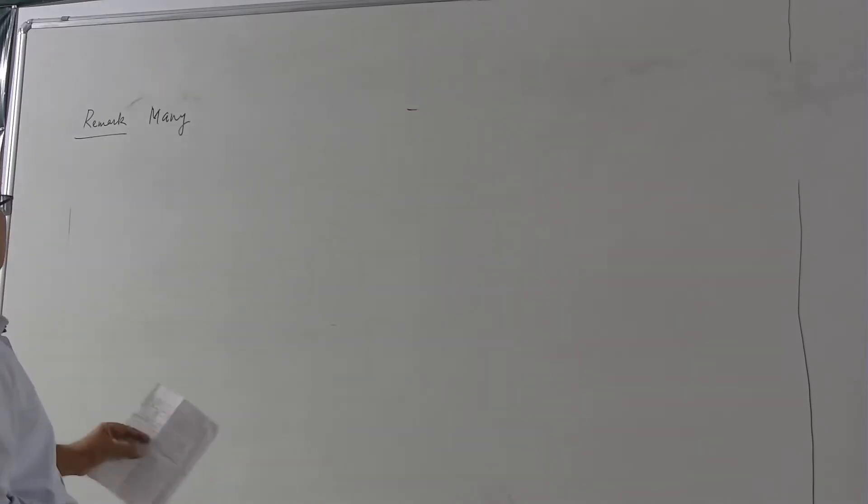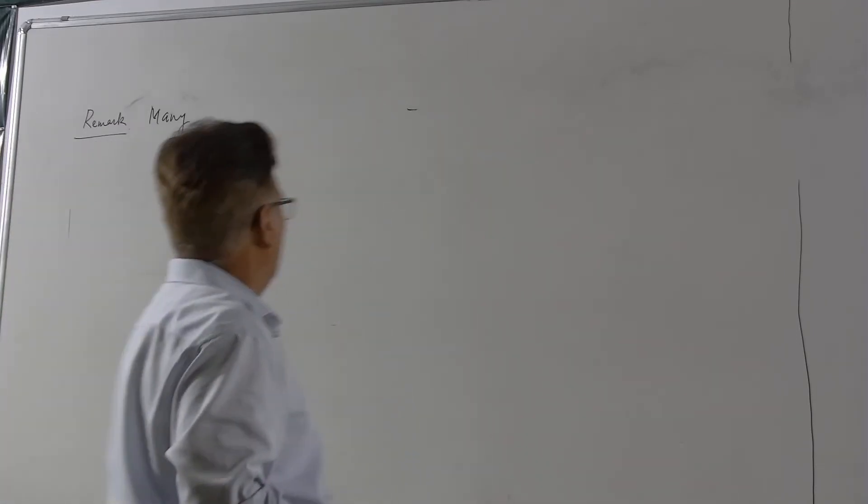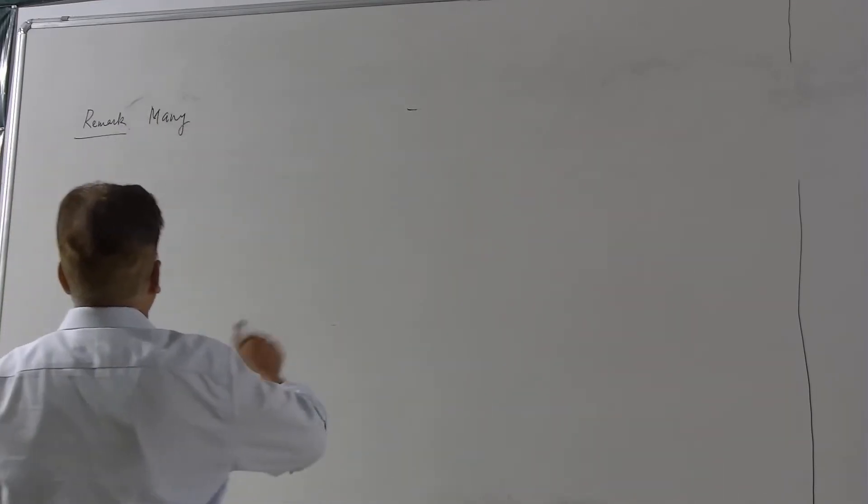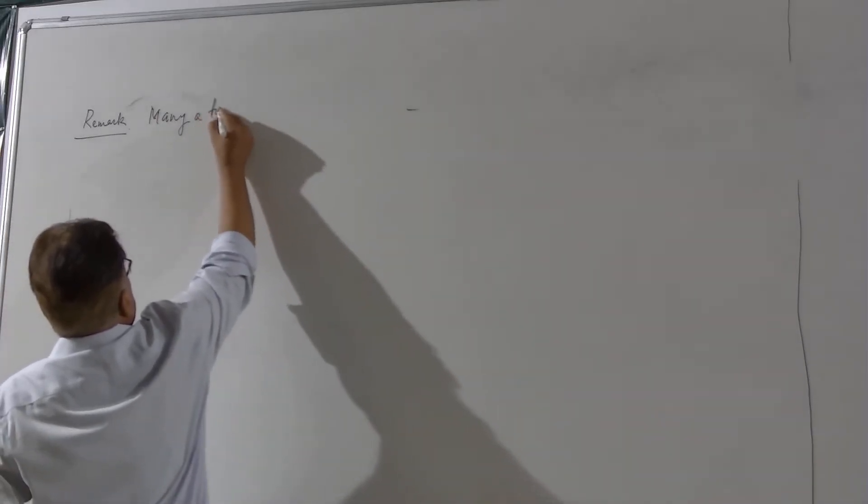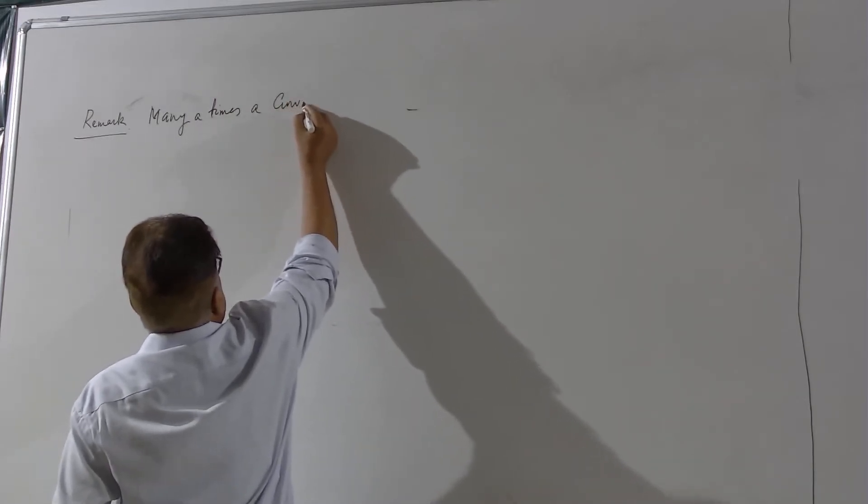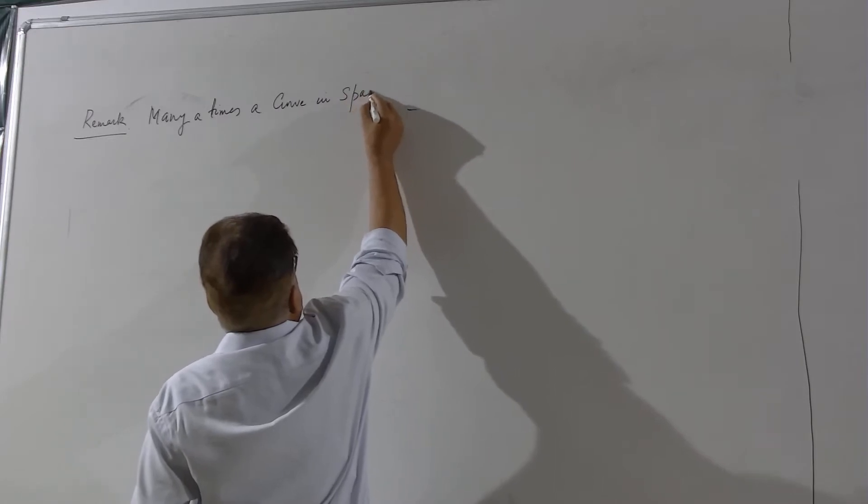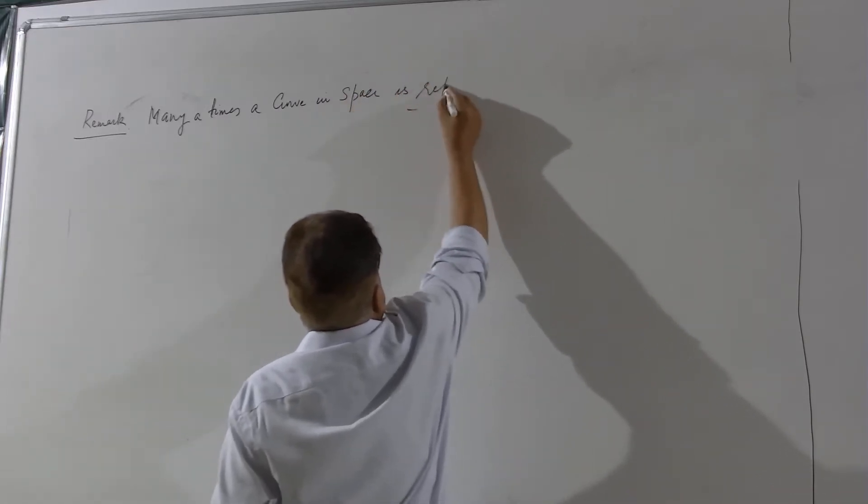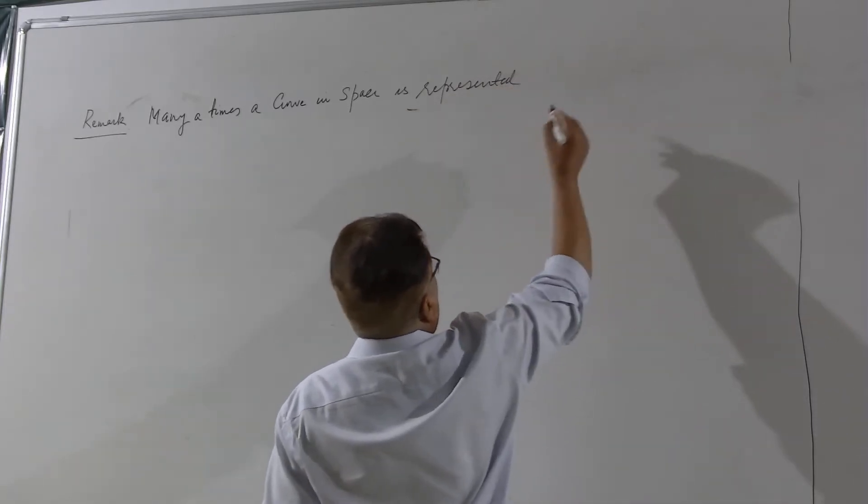We discuss some examples now. There are other ways to realize a space curve in our theory. In fact, many times a curve in space is represented as a section of a surface by another.